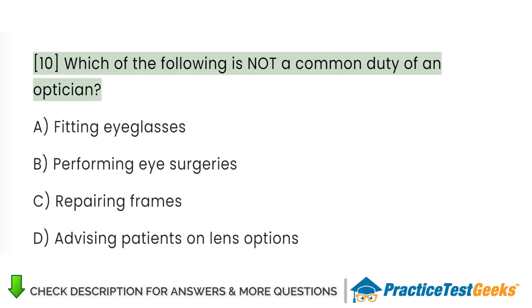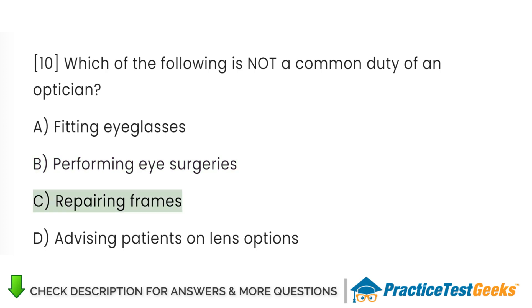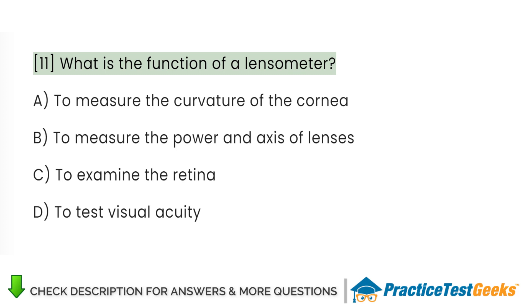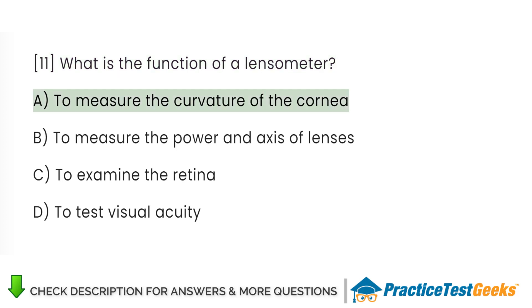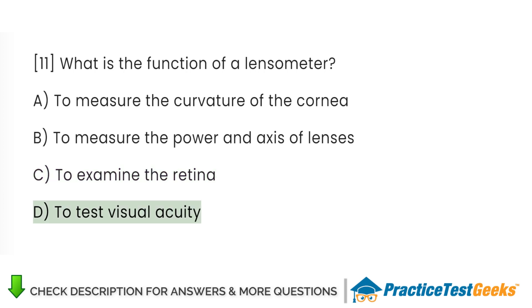Which of the following is not a common duty of an optician? A. To measure the curvature of the cornea. B. To measure the power and axis of lenses. C. To examine the retina. D. To test visual acuity.